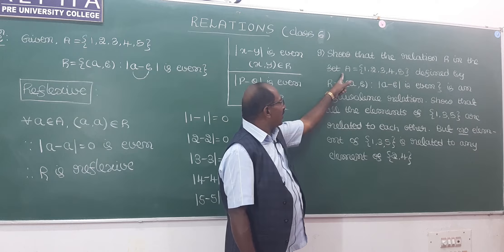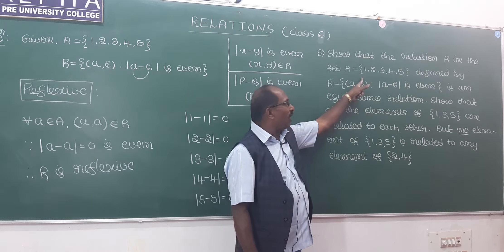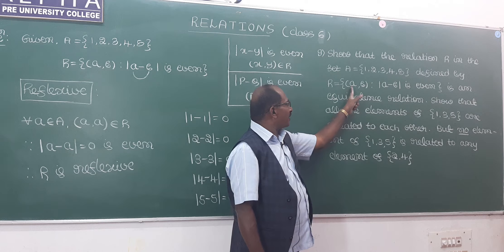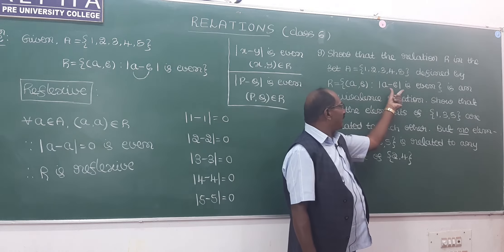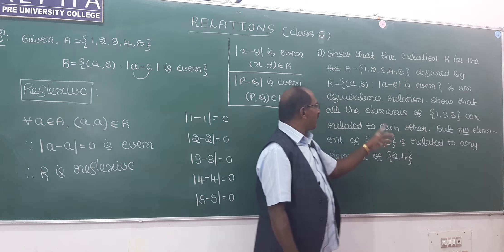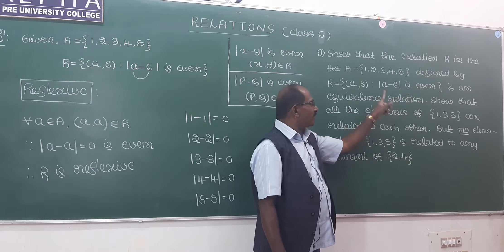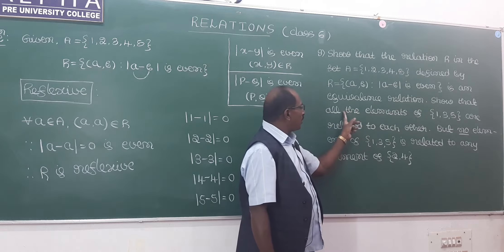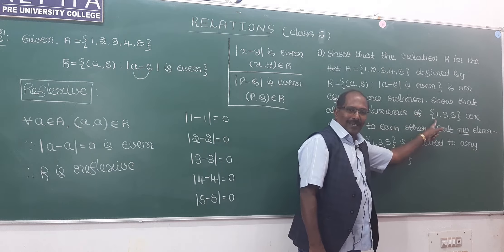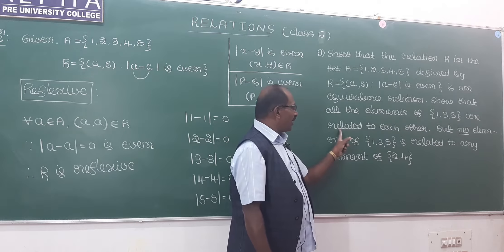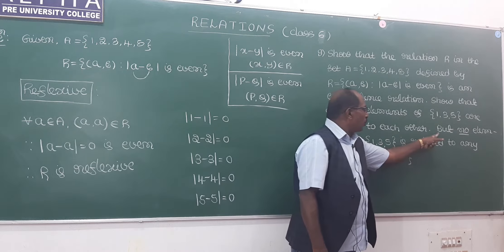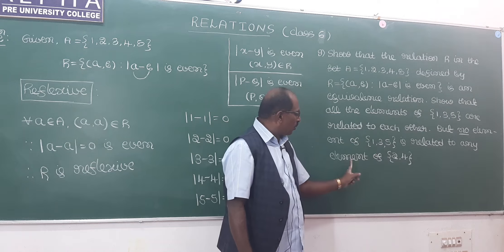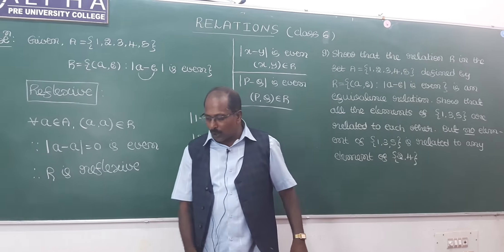Show that the relation R in the set A = {1, 2, 3, 4, 5}, defined by R = set of all ordered pairs (a, b) such that |a - b| is even, is an equivalence relation. Here we have two sub-questions: show that all the elements of the set {1, 3, 5} are related to each other, but no element of {1, 3, 5} is related to any element of {2, 4}.